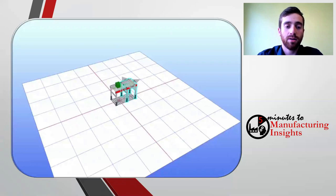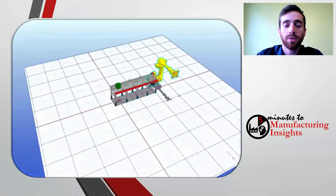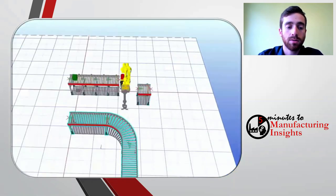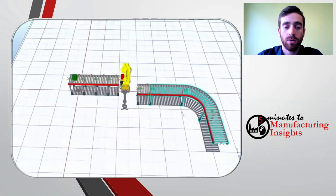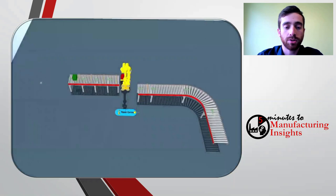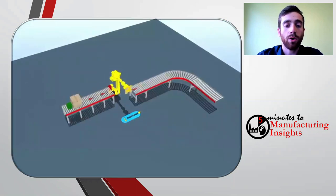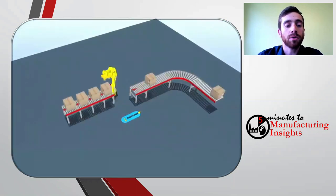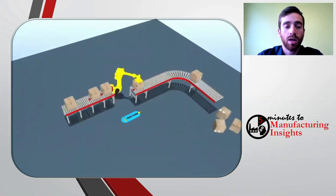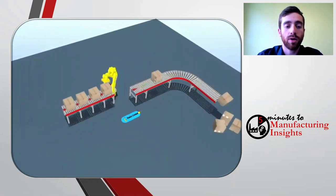I'm glad you asked. Emulate3D can be used as a simulation tool to help develop concepts, design systems, and understand product flow. There is no limit to the scale of what can be simulated, whether it's a single process, machine, cell, or fully scoped system. The software makes it easy to link objects together to develop the solution and even run experiments within the software to optimize the solution.